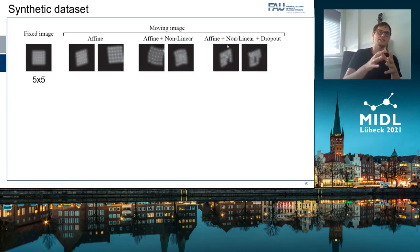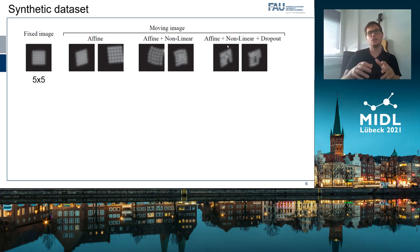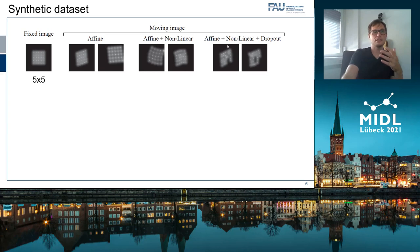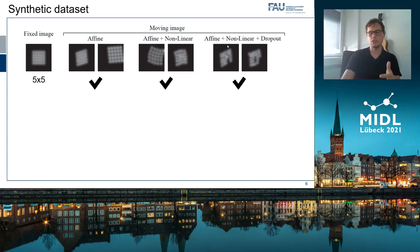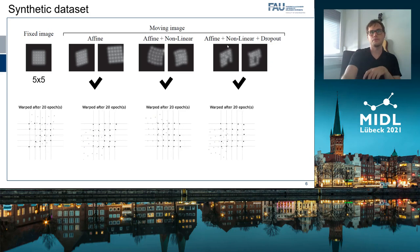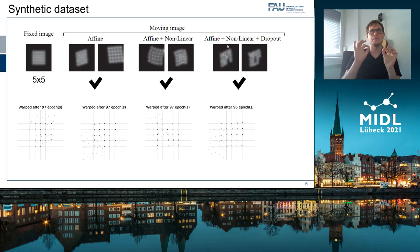Next, we were interested in what transformations our network can actually learn. We used a synthetic dataset based on five-by-five points and looked at the affine transformation, the affine transformation combined with a nonlinear transformation as seen in the center, and the affine plus nonlinear transformation with some points removed — what we call dropout — to simulate occlusions or missing data. Long story short, the network is capable of dealing with all three sets of data. The points nicely converge early in training and stick to the ideal positions at later epochs.